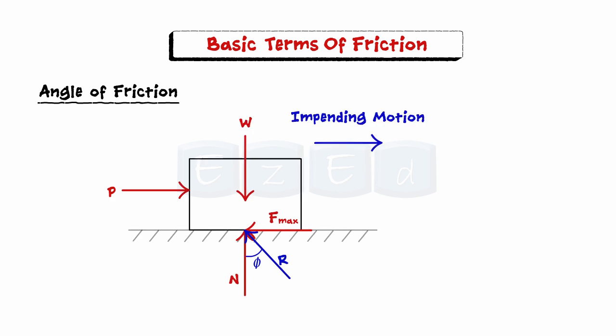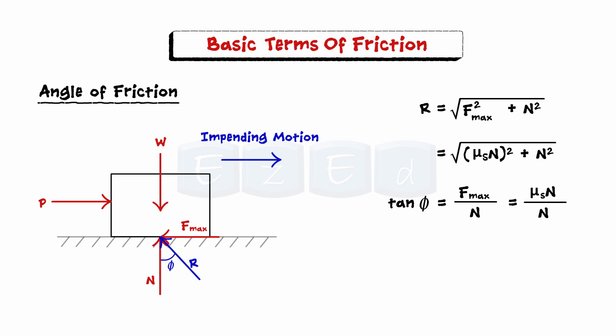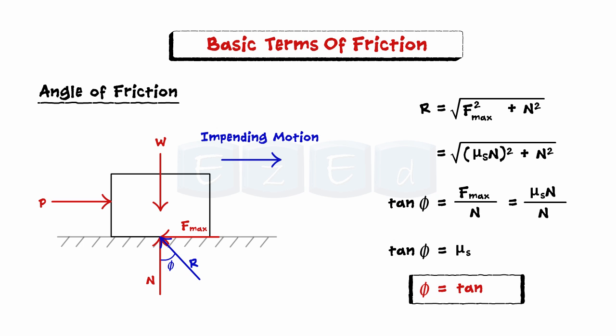Now we can find the resultant using the relevant relation. Also, we can find the value of angle of friction as follows: the angle of friction phi is equal to tan inverse of the coefficient of static friction μs.